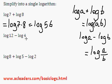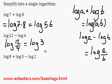so log 12 minus log 4 is log 12 over 4 because of this rule. And 12 over 4 is 3, so that's equal to log 3.